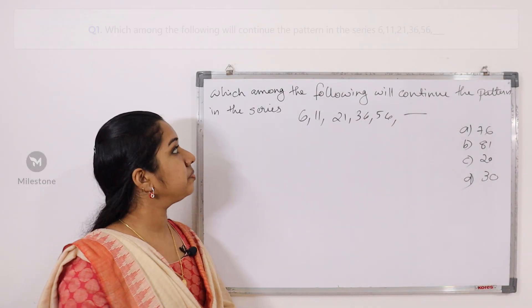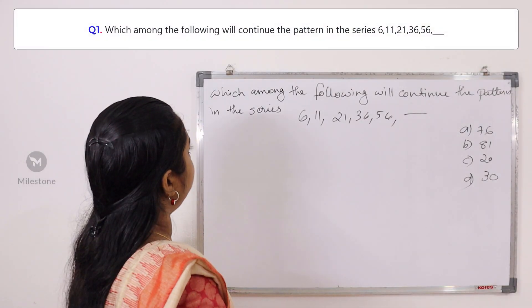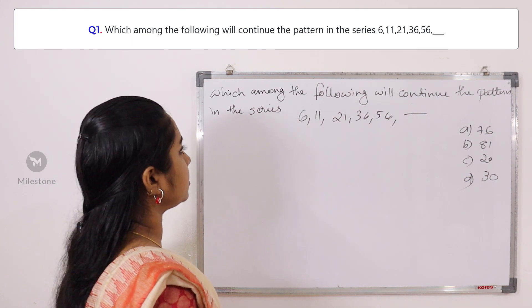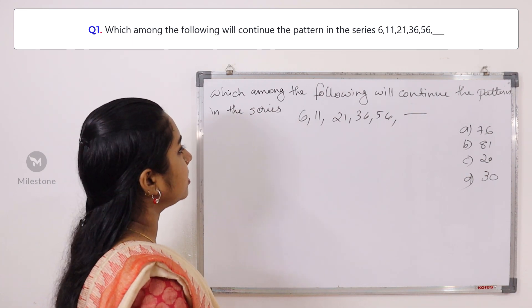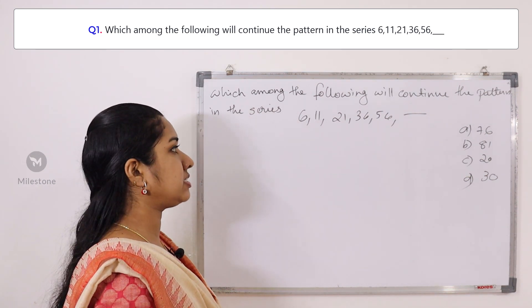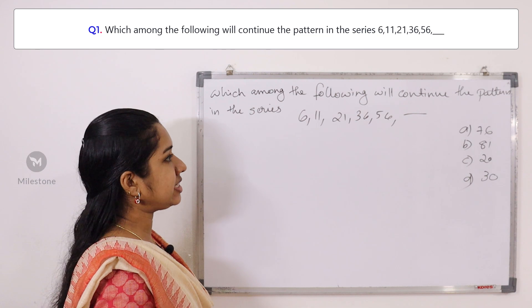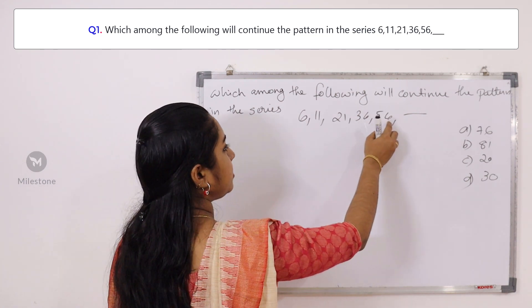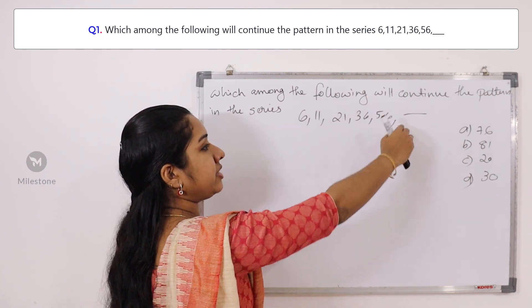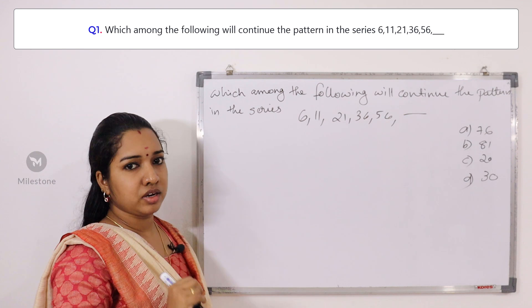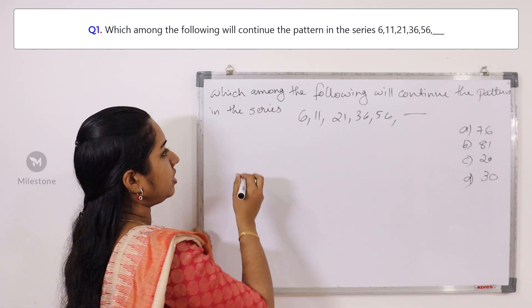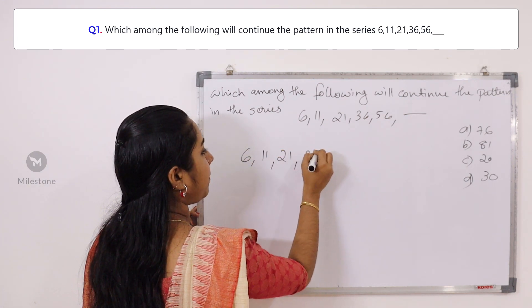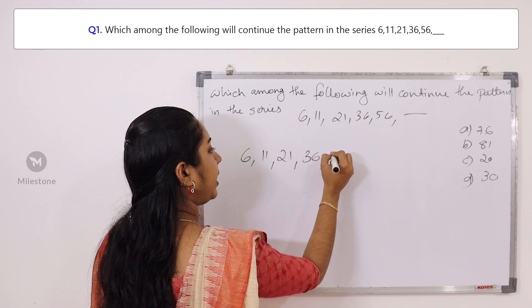First question: Which among the following will continue the pattern in the series? 6, 11, 21, 36, 56 — we will discuss the next number.